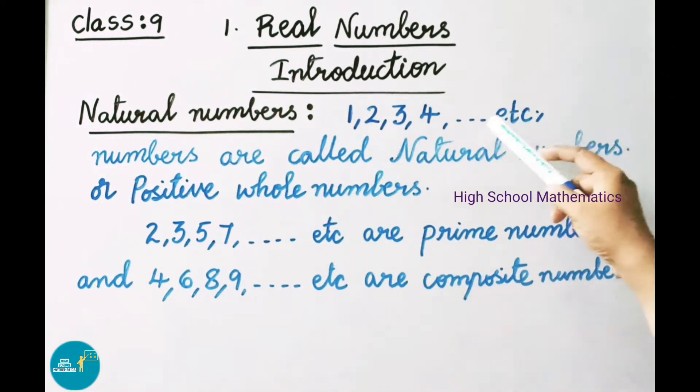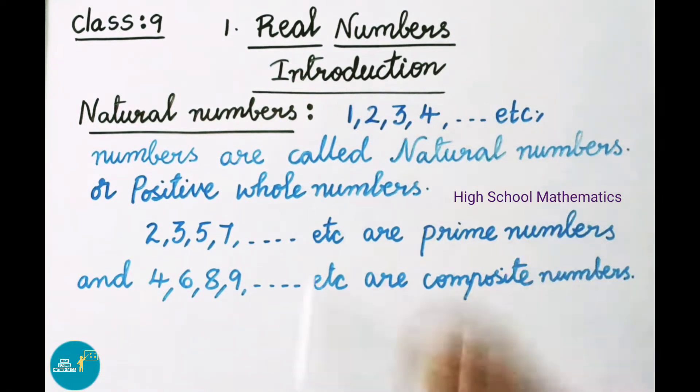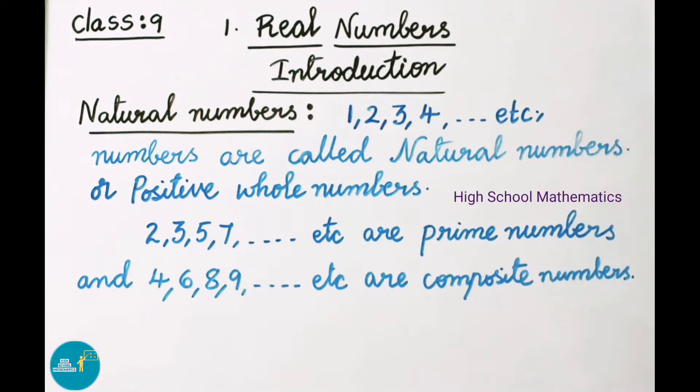If you take these natural numbers and add 0, then the set of numbers becomes whole numbers.